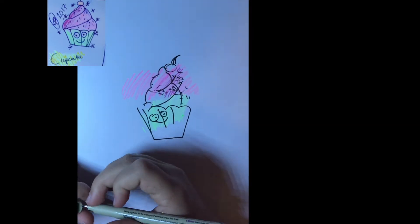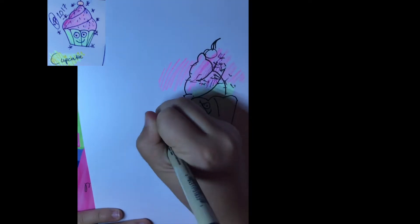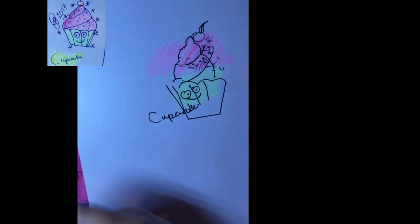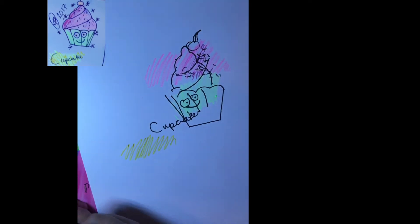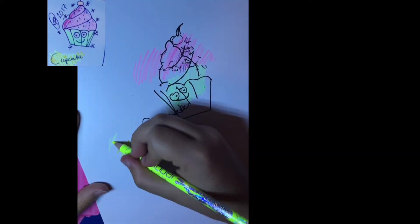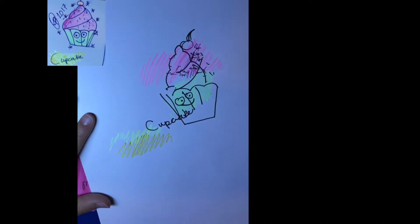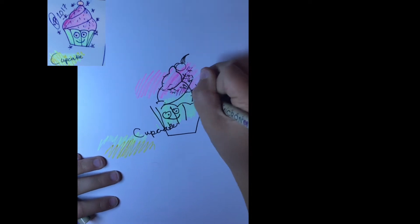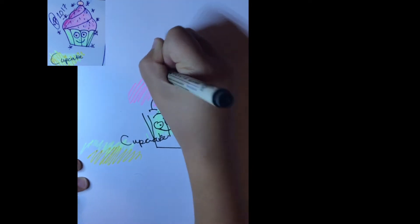And then I'm gonna right now just add glitter and then cherry sparkles, and then I'm gonna write 'cupcake' and highlighting it.